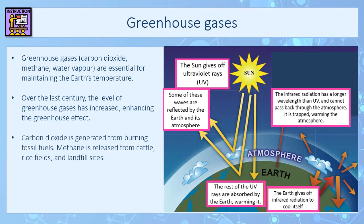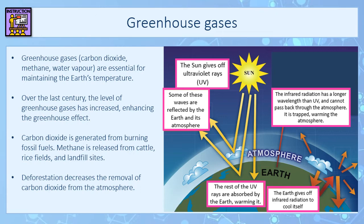Some human activities have increased the level of these greenhouse gases. Carbon dioxide is generated from burning fossil fuels for things like transport and factories. Methane is also released from cattle farming, rice fields and an increased use of landfill sites. Deforestation to provide wood for building materials decreases the removal of carbon dioxide from the atmosphere that would naturally happen when the trees are present, alongside generating more carbon dioxide from human activity.